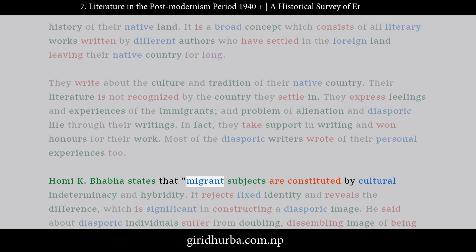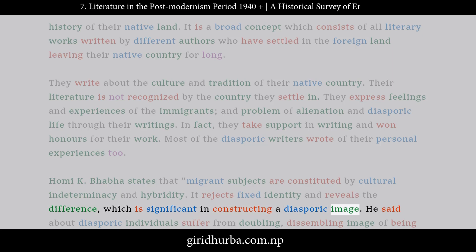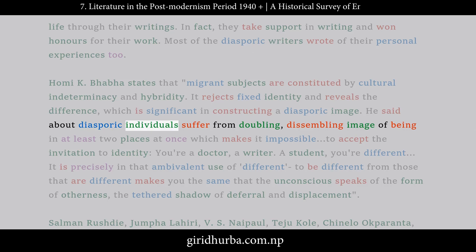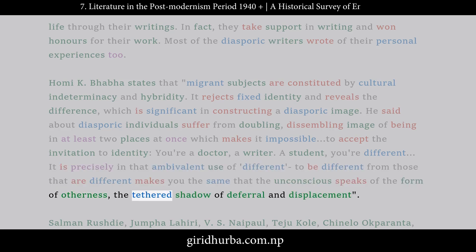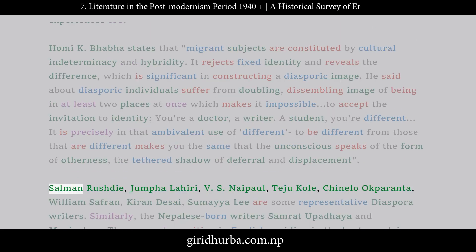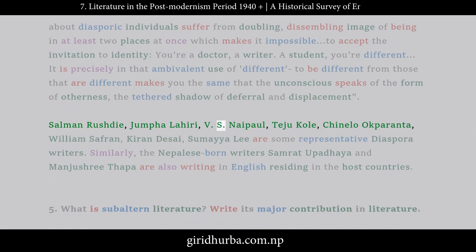Homi K. Bhabha states that migrant subjects are constituted by cultural indeterminacy and hybridity. It rejects fixed identity and reveals the difference significant in constructing a diasporic image. Diasporic individuals suffer from doubling — being in at least two places at once. Salman Rushdie, Jhumpa Lahiri, V.S. Naipaul, Chinnelo Okaranta, William Safran, Kiran Desai, and Samaya Lee are some representative diaspora writers. The Nepalese-born writers Samrat Upadhyaya and Manjushri Thapar are also writing in English while residing in host countries.